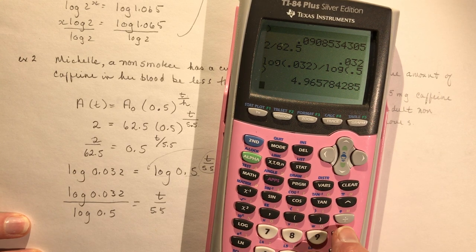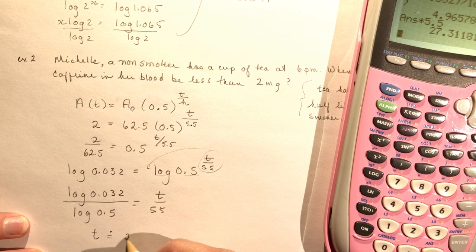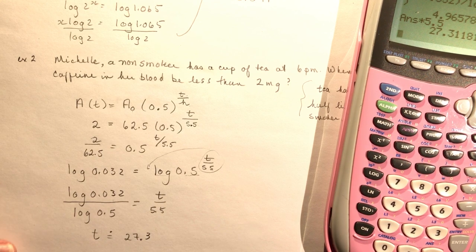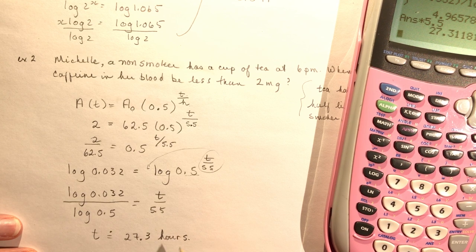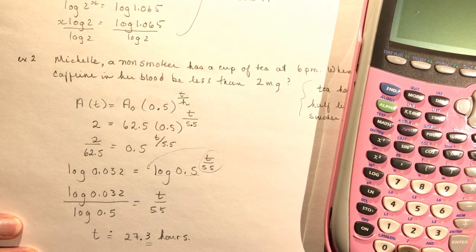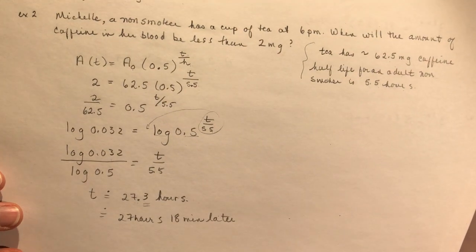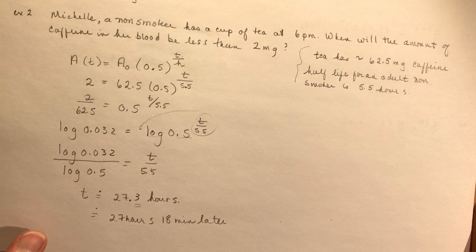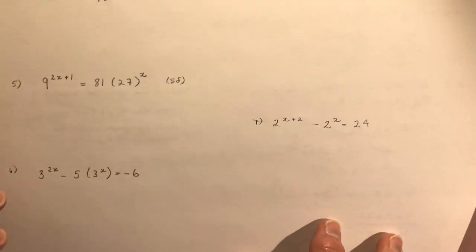Multiply by 5.5 to get t: log(0.032) ÷ log(0.5) × 5.5 ≈ 27.3. So t ≈ 27.3 hours. Convert the 0.3 hours to minutes: 0.3 × 60 = 18 minutes. The answer is approximately 27 hours and 18 minutes later — that's essentially a whole day, so she'll be awake for a very long time!